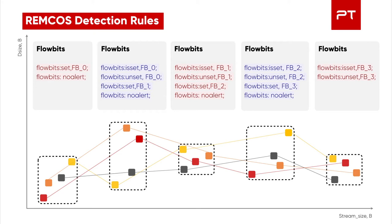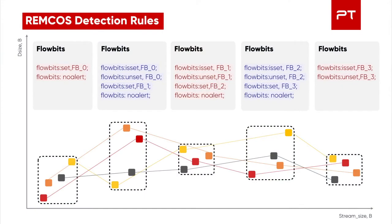By the way, we frequently combine this method with content-based detection when we don't have enough fixed data to eliminate false positives. This method also works to detect other malware that encrypts TCP packet payloads, such as Tofsi, Bayrobe, and Viaroot. You can find all the details for them in the rule set, to which I will give a link at the end of the presentation.